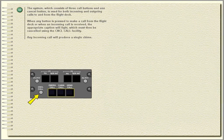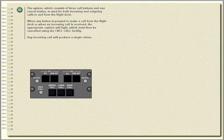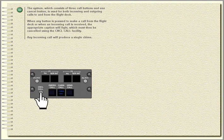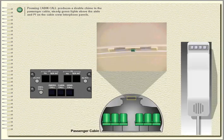The system, which consists of three call buttons and one cancel button, is used for both incoming and outgoing calls to and from the flight deck. When any button is pressed to make a call from the flight deck, or when an incoming call is received, the appropriate caption will light, which must then be cancelled using the cancel call facility. Any incoming call will produce a single chime. Pressing cabin call produces a double chime in the passenger cabin, steady green lights above the aisle, and PI on the cabin crew interphone panels.